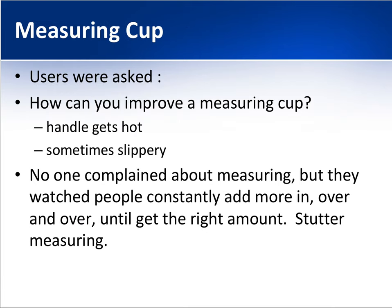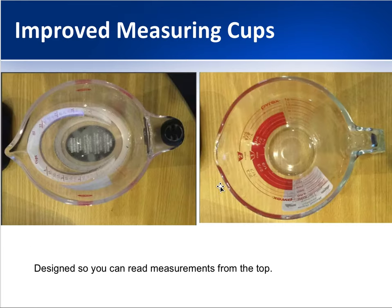In some of the other videos we've spoken about measuring cups — good and bad ones. When users were asked how to improve a measuring cup, they'd say things like the handle gets hot or slippery, but if you're actually observing someone, you can see they're doing what I call stutter-measuring — looking down and going back up. That observation led to better designs where you can read the measurement from the top, and this is where OXO and Pyrex modified their designs as well.